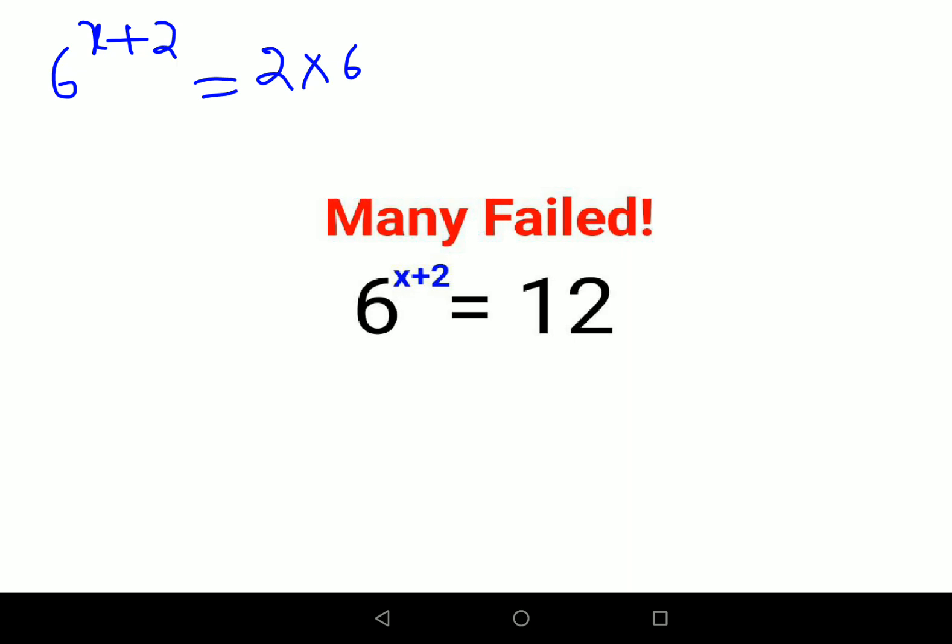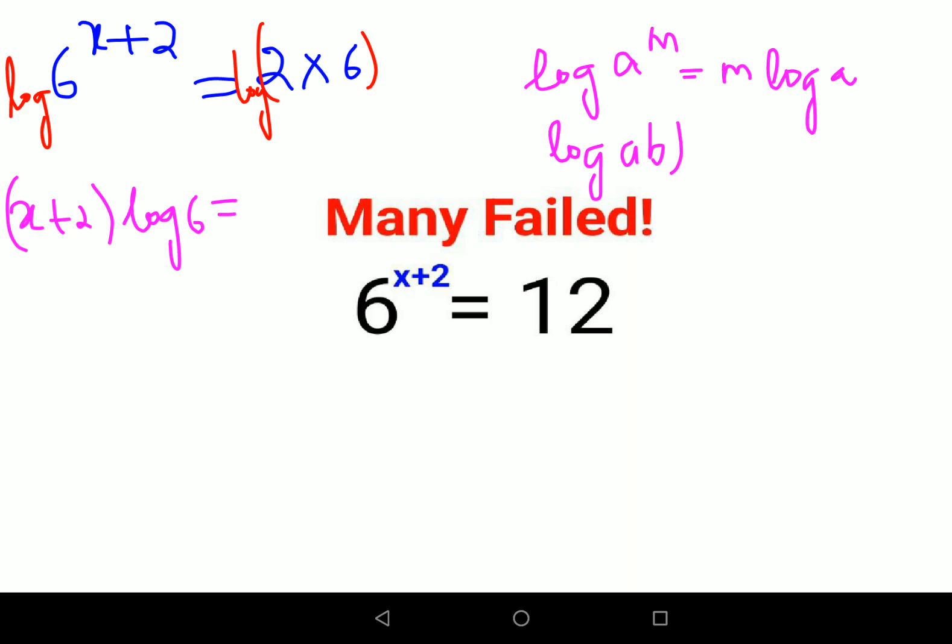Now next, what we can do is directly take log on both sides. On your LHS, I can see log of a raised to m, that can be written as m log a. So this can be written as x plus 2 into log 6.